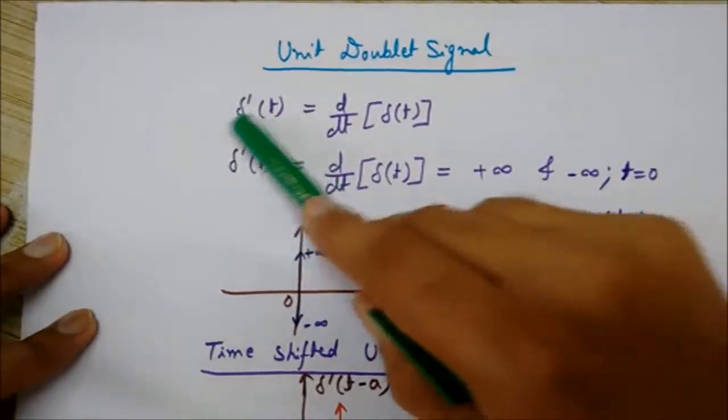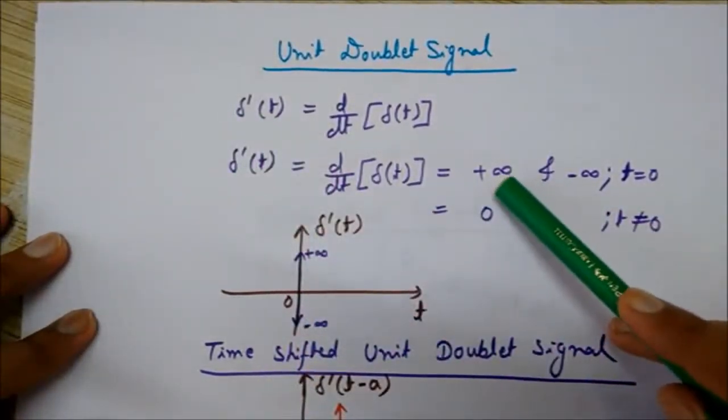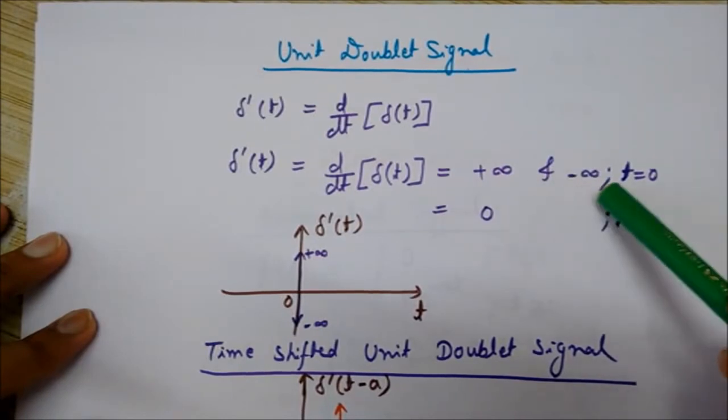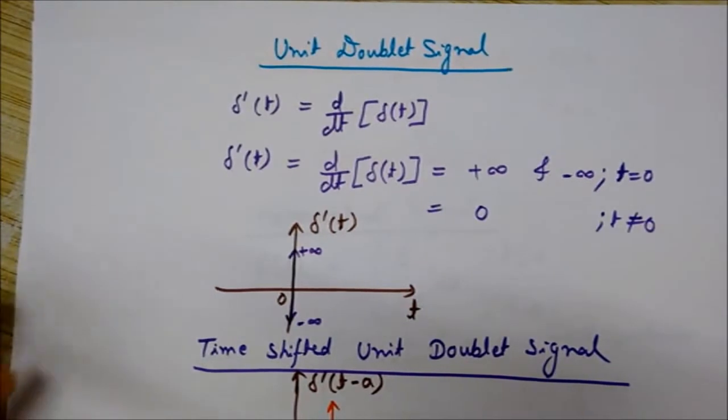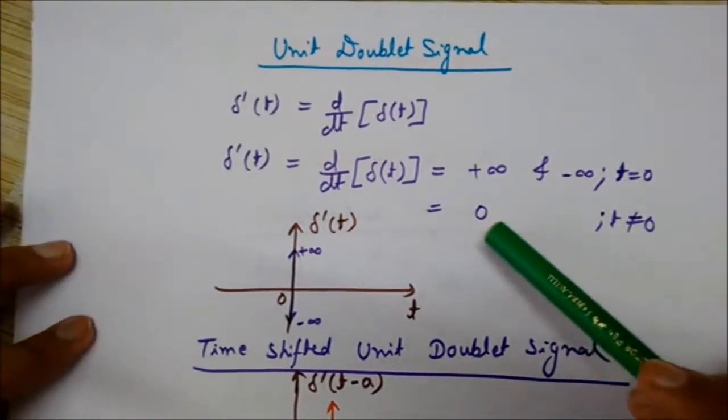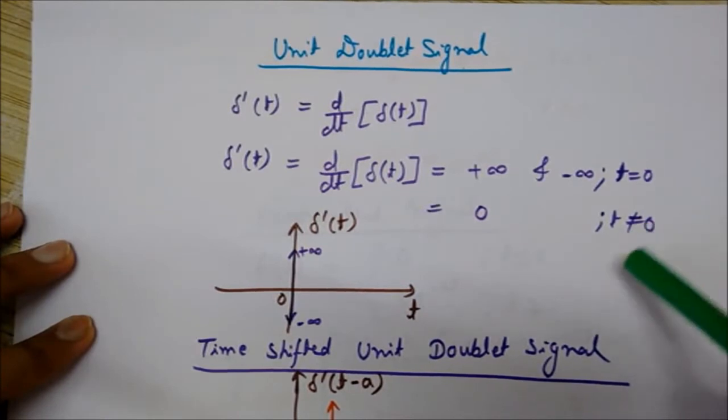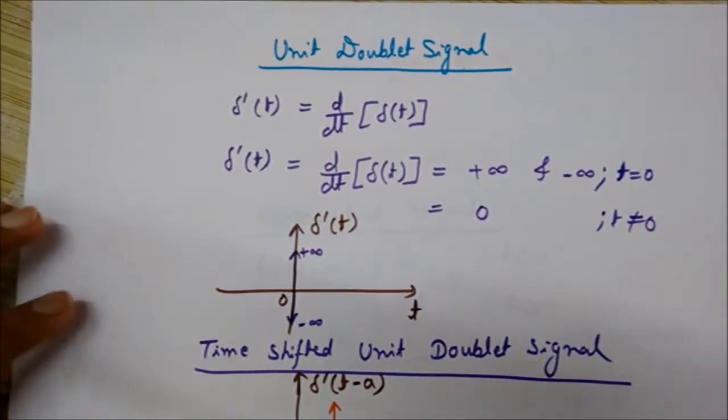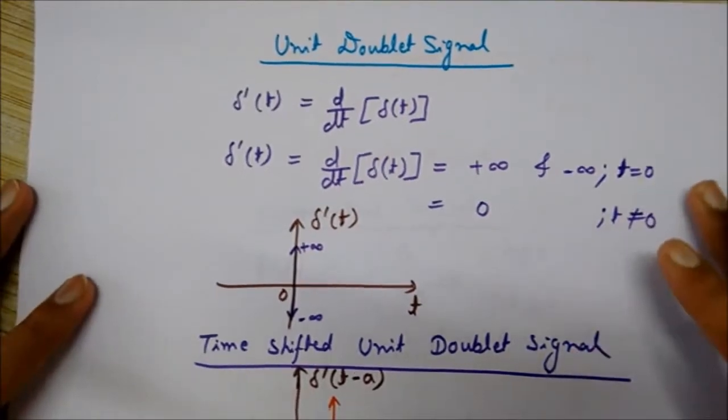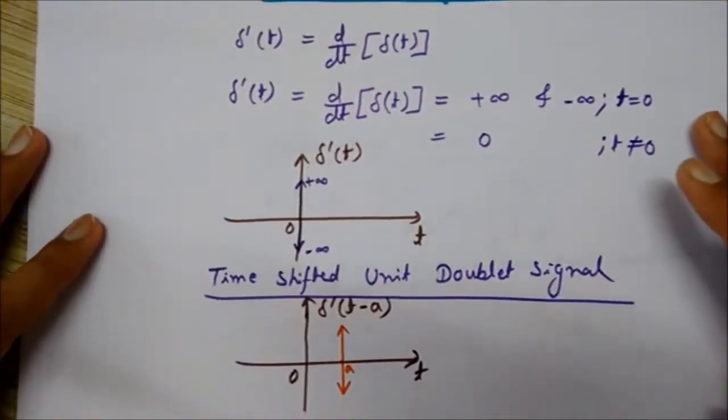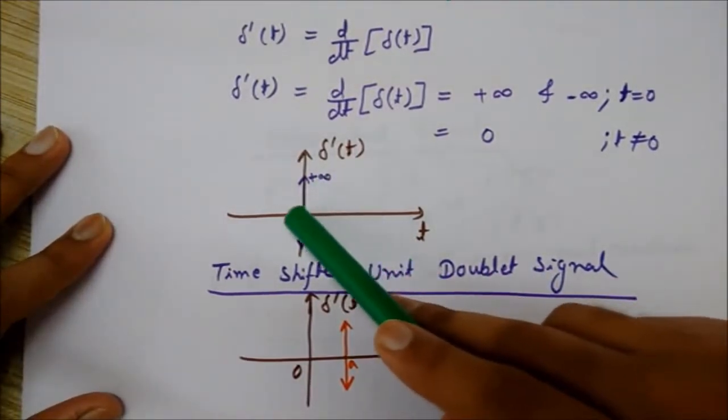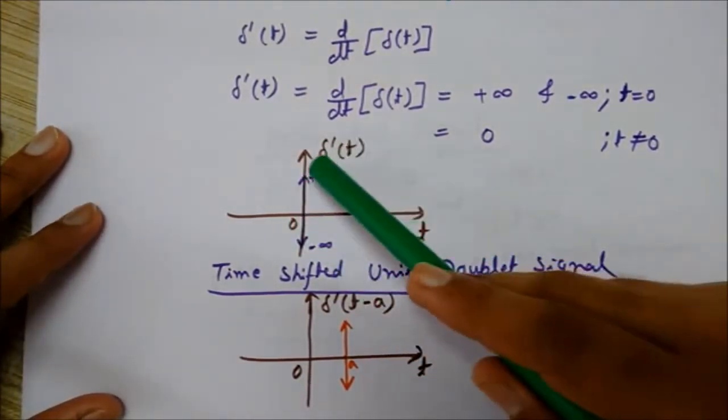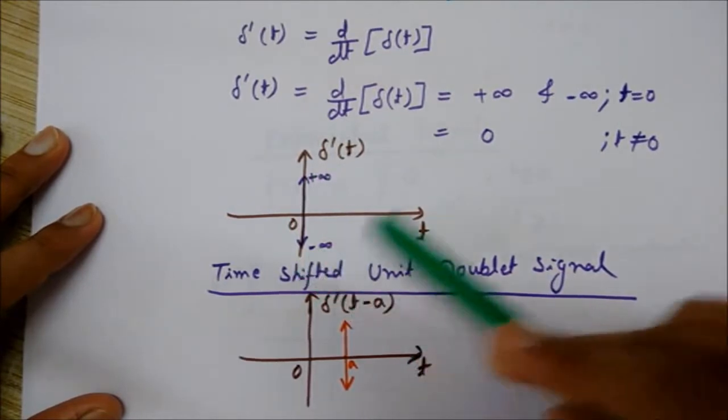The unit doublet signal equals plus infinity and minus infinity at t equals zero, and its value is zero when t is not equal to zero. You can see the same thing in this diagram.